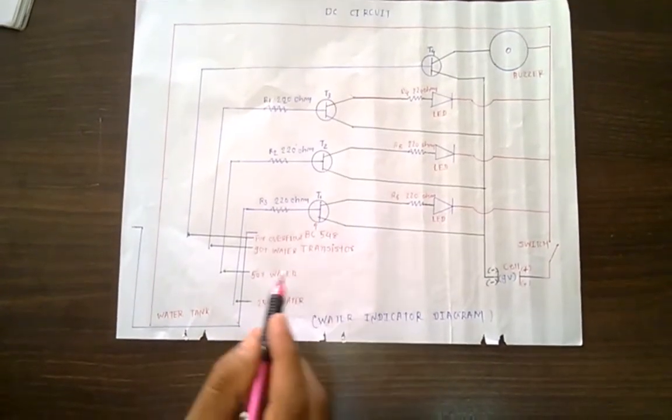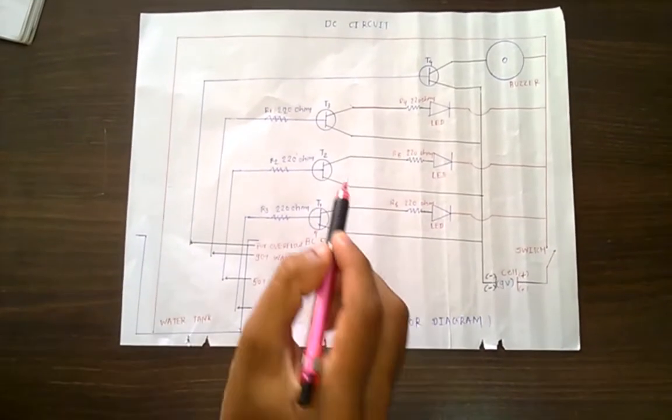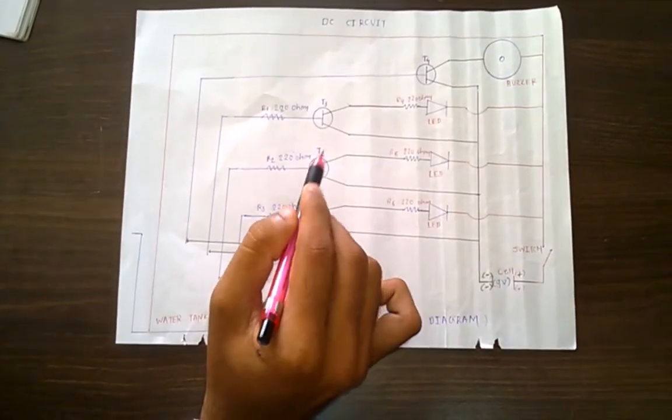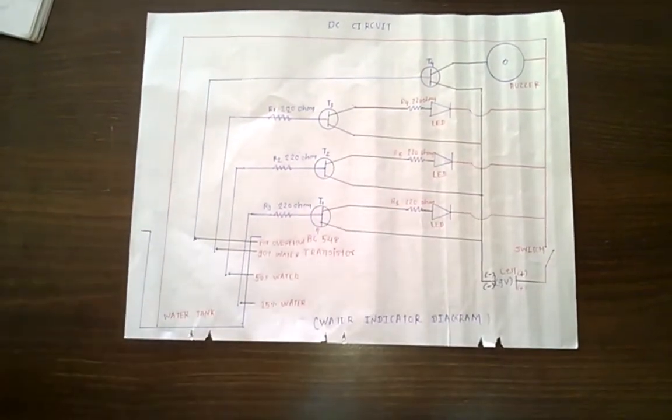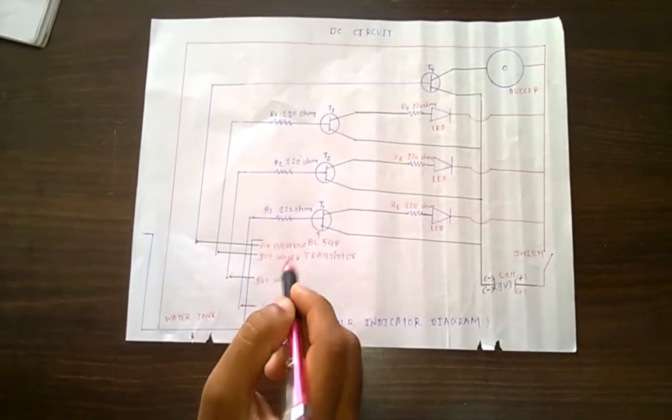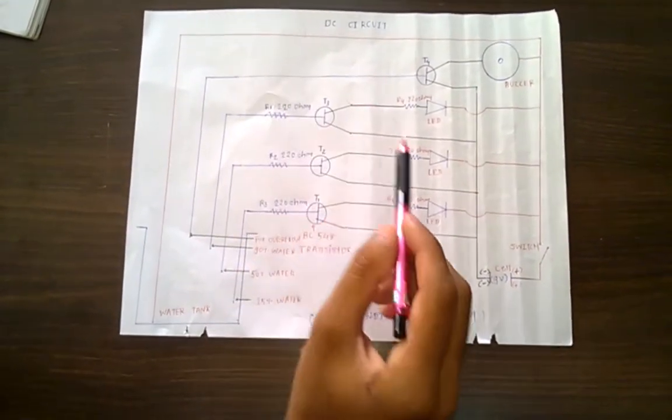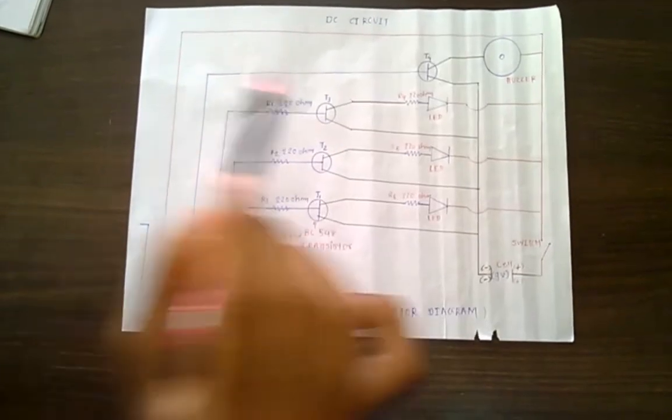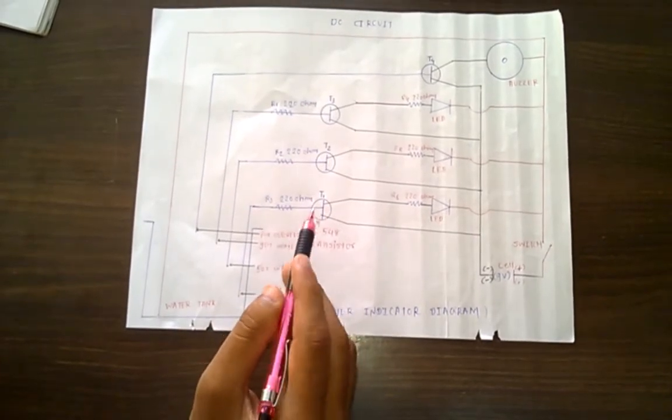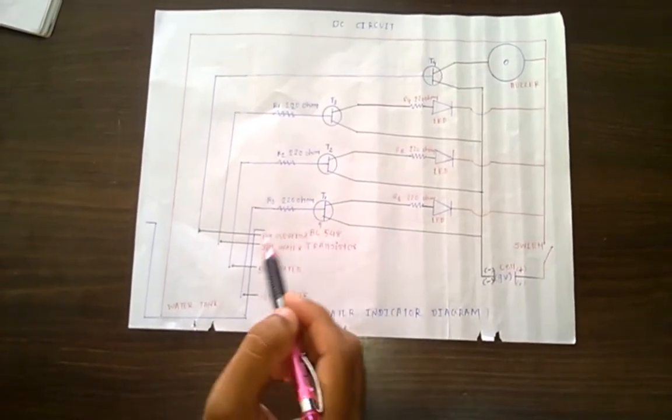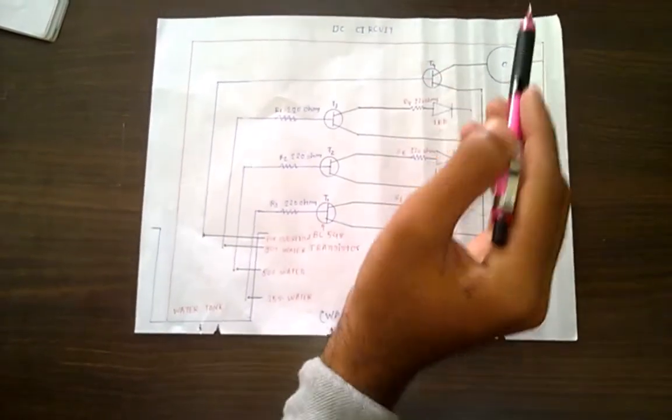After filling up to 50% of water, due to closed path, T2 transistor is activated and gives blue LED. After 90% of water fills up in the water tank, transistor T3 is activated and gives red LED. After overflow from the water tank, due to closed path, the T4 transistor is activated and buzzer is on.